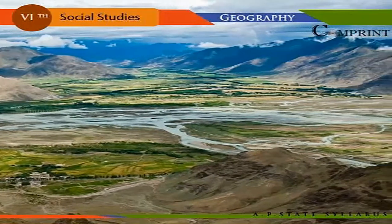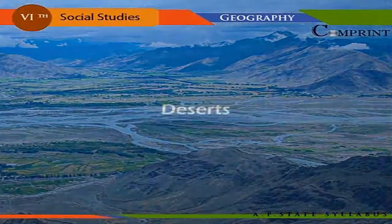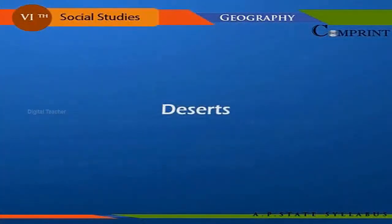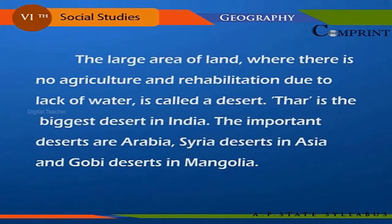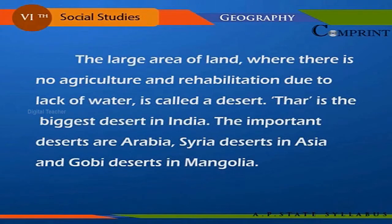A desert is a large area of land where there is no agriculture or habitation due to lack of water. The Thar desert is the biggest desert in India. The important deserts in Asia are the Arabian and Syrian deserts, and the Gobi desert in Mongolia.